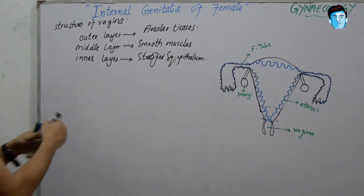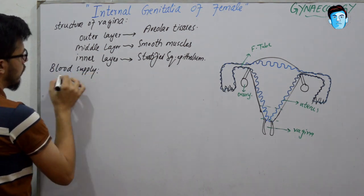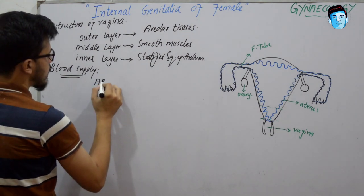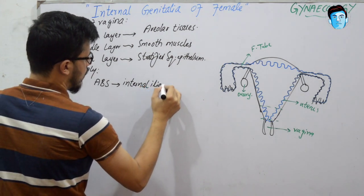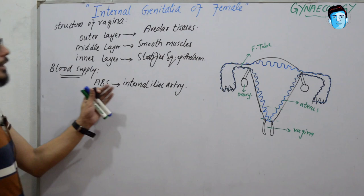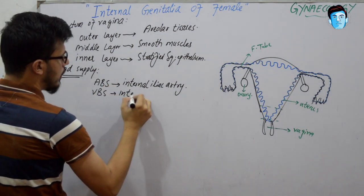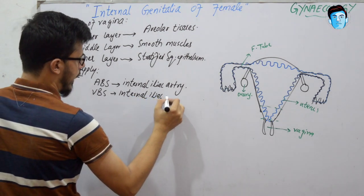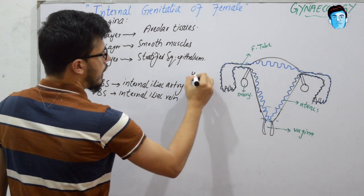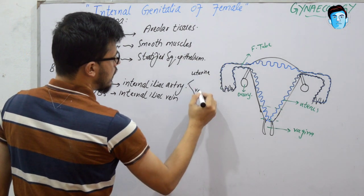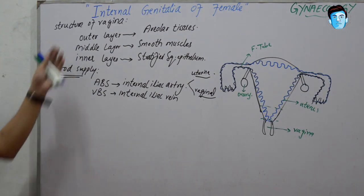The arterial blood supply of the vagina is from the internal iliac artery, and the venous blood supply is from the internal iliac vein. The internal iliac artery is further divided into two branches: the uterine artery and the vaginal artery. These uterine and vaginal arteries combine together to form a plexus, providing the blood supply to the vagina.